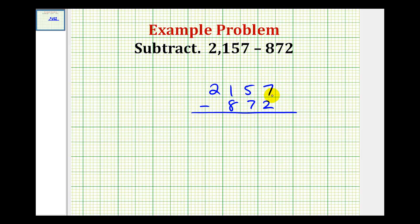And now we'll subtract, working our way from right to left. Starting with the ones place value, the tens, the hundreds, and then the thousands. So first we have 7 minus 2, that would be 5.